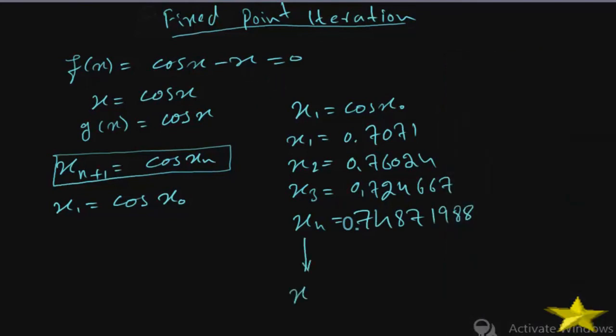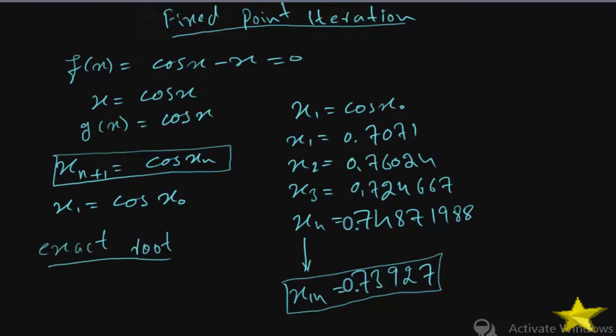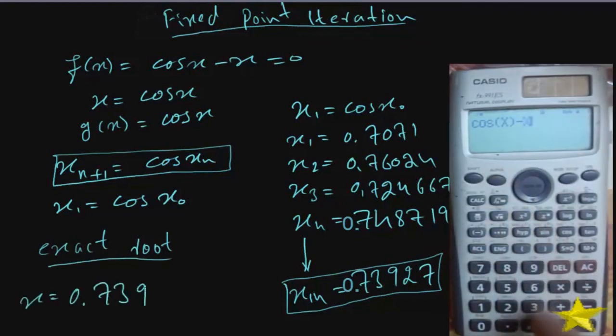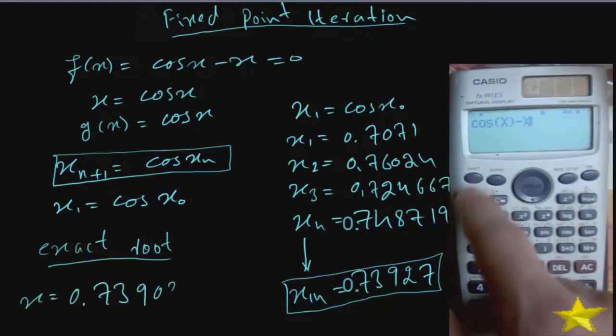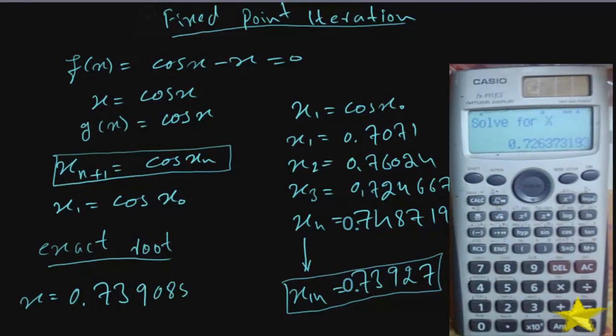Here on the 14th iteration we get 0.73927. Now in order to compare we can also find the exact root and errors. Write the original function in your calculator.